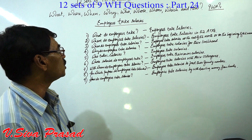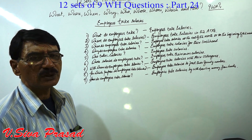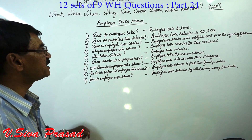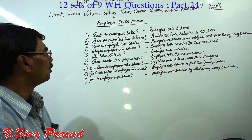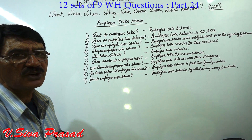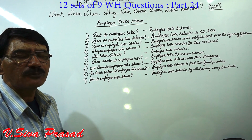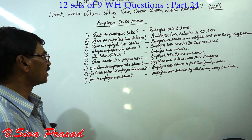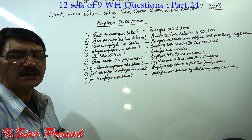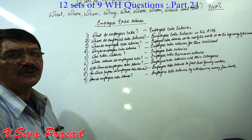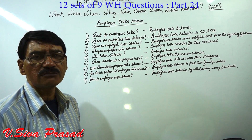Set 6 — Future Continuous: What will employees be taking? Employees will be taking their salaries. Where will employees be taking salaries? Employees will be taking salaries in the ATMs. When will employees be taking salaries? Employees will be taking salaries at the end of the month or at the beginning of the month. Why will employees be taking salaries? Employees will be taking salaries for their livelihood. Who will be taking salaries? Employees will be taking salaries. Whose salaries will employees be taking? Employees will be taking their own salaries. With whom will employees be taking salaries? Employees will be taking salaries with their colleagues. For which purpose will employees be taking salaries? Employees will be taking salaries to feed their family members. How will employees be taking salaries? Employees will be taking salaries by drawing money from the banks.